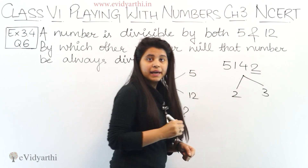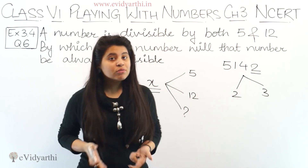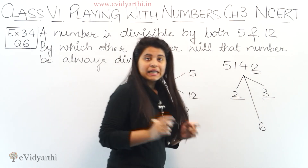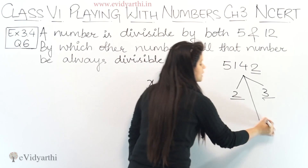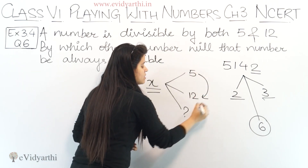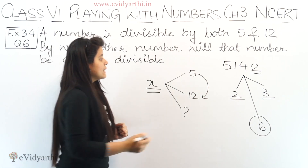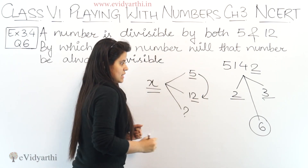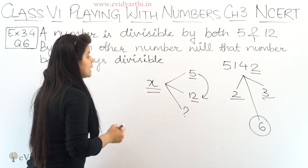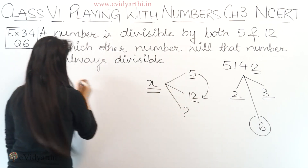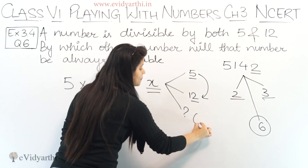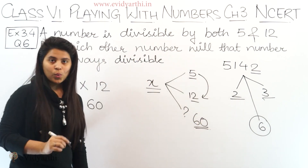These numbers are divisible by both numbers. Now, if we know that in the case of 6, if a number is divisible by 2 and 3 then it will be divisible by 6. This means we can say the number will be divisible by 6. The same logic applies here: when a number is divisible by both numbers, we multiply them — just as 2 times 3 is 6. So if a number is divisible by both 5 and 12, then 5 times 12 equals 60. That means the number will always be divisible by 60.